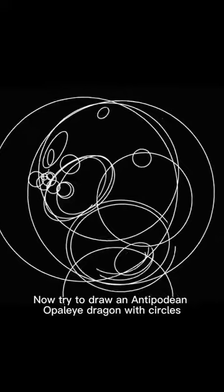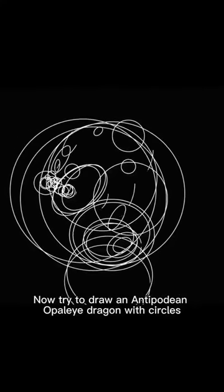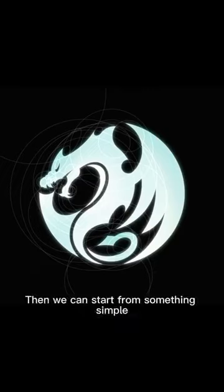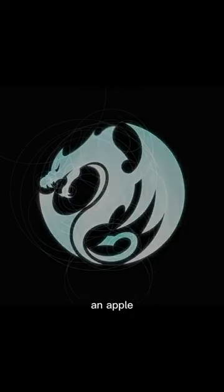Now try to draw an Antipodean opal dragon with circles. This might be a little hard. Then we can start from something simple, for example, an apple.